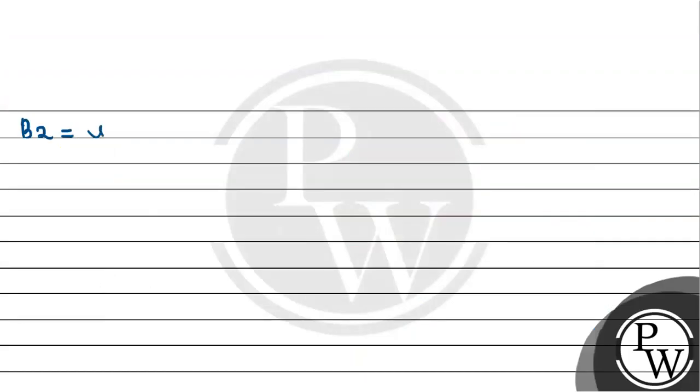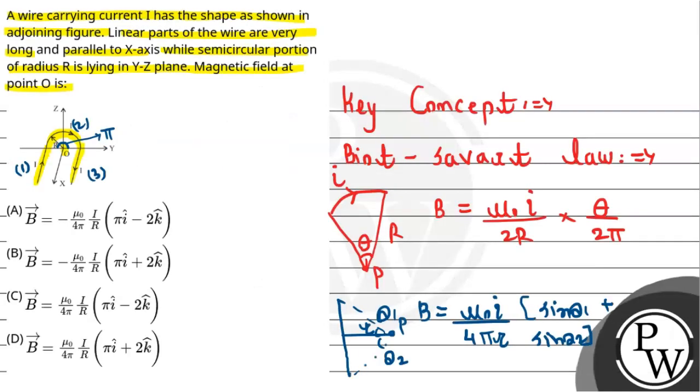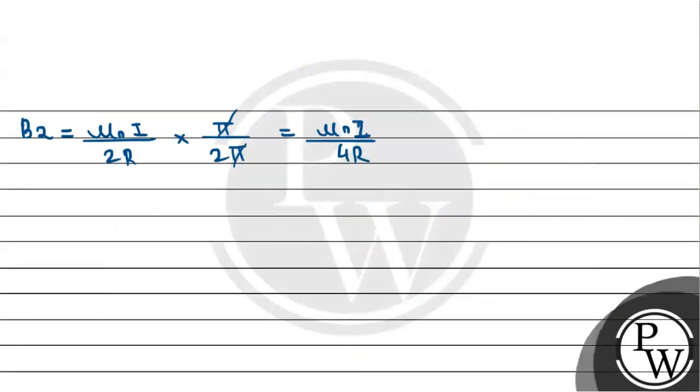So the required magnetic field is mu naught I divided by 2R times theta which is pi divided by 2 pi. Pi cancels, 2 goes to 4. This becomes mu naught I divided by 4R. If we look at the direction, the magnetic field is in this loop in the y-z plane and current is flowing clockwise, so the magnetic field is in negative x direction, minus i hat.